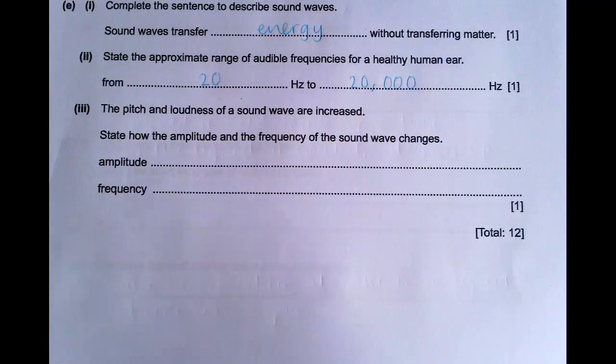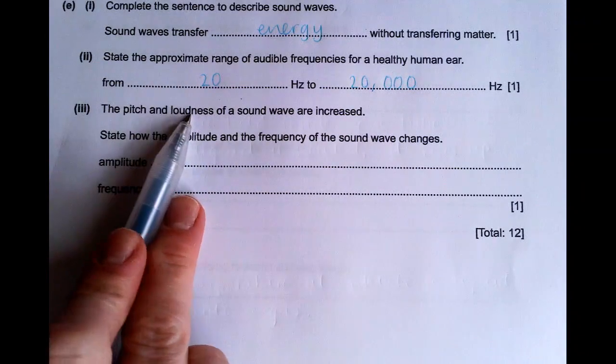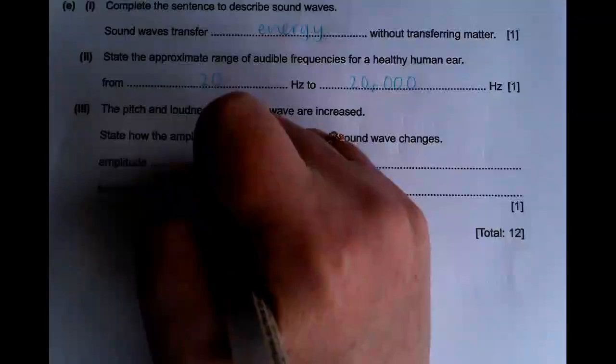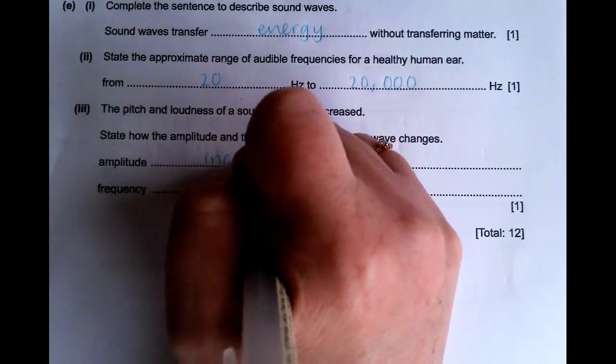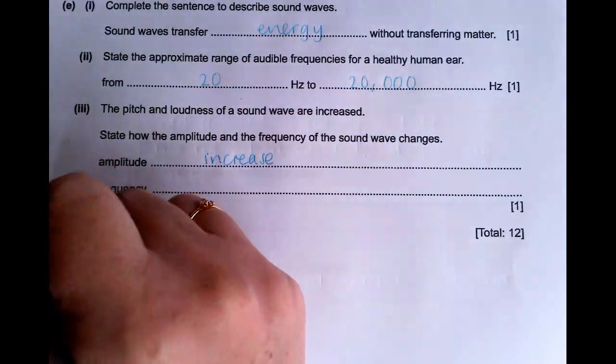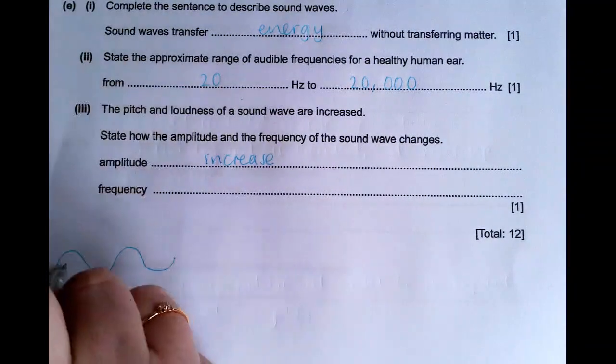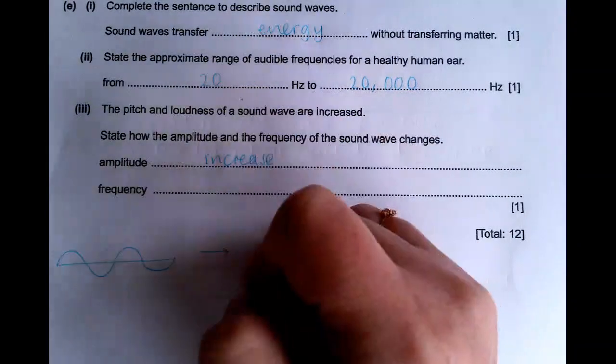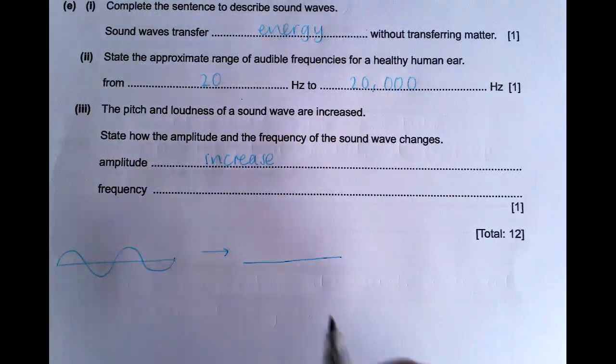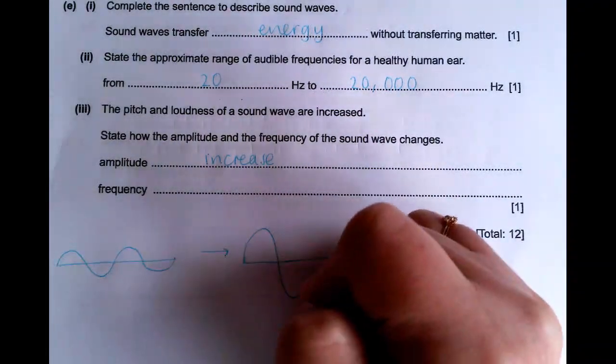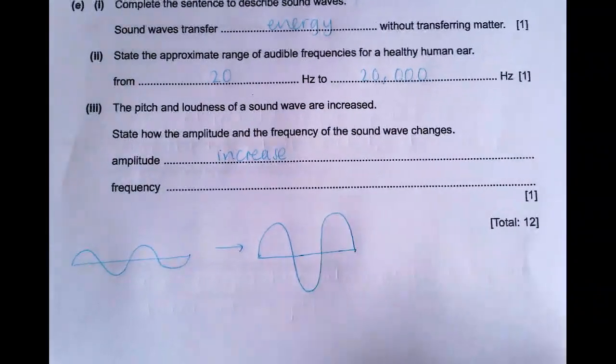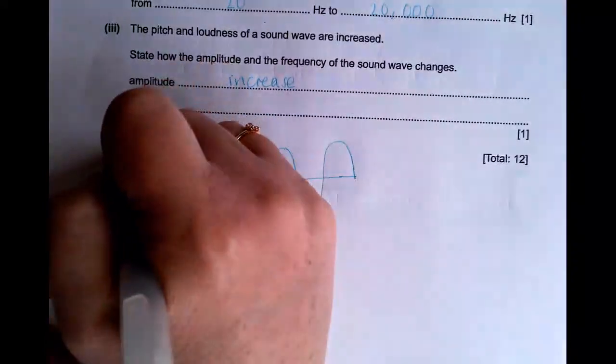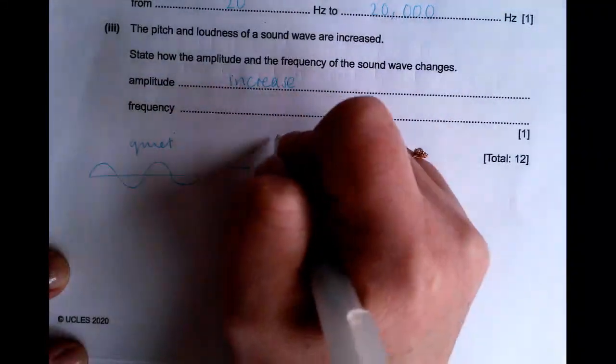So amplitude is a measure of loudness. The amplitude has to increase to make a louder sound. So if I draw an original wave that looks something like this, to make that louder, if I have my equilibrium point, I have to have a higher amplitude for a louder sound. So that's quiet, that's loud.